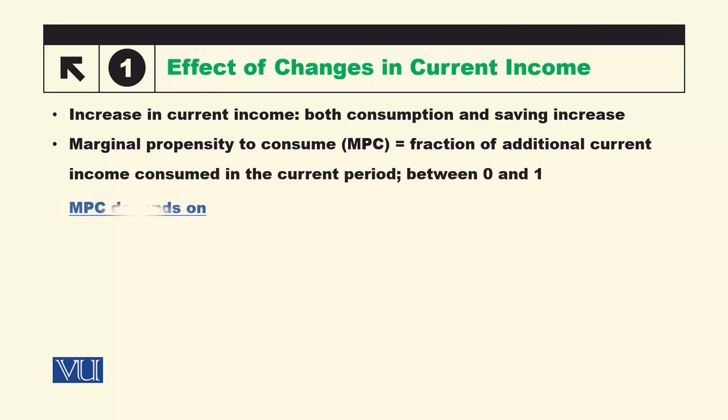What determines whether MPC is closer to 1 or 0? It depends on people's willingness to defer satisfaction. If MPC is 0.7, it means they are using 30% of their current income for future consumption. If MPC is 0.4, it means a larger portion of current income is being saved for future consumption — reflecting how people wish to maximize their lifetime utility.